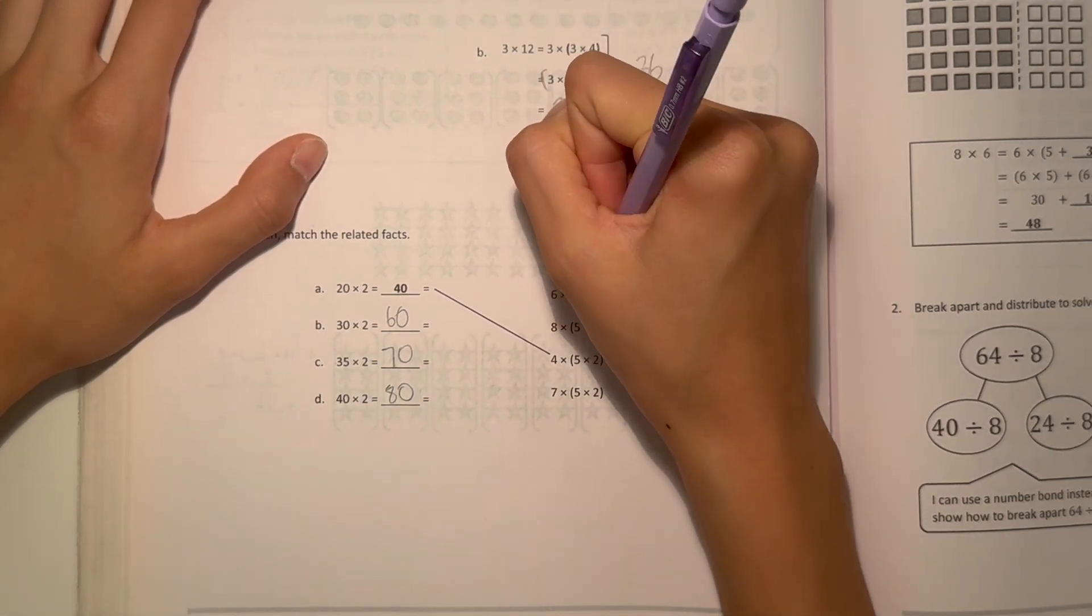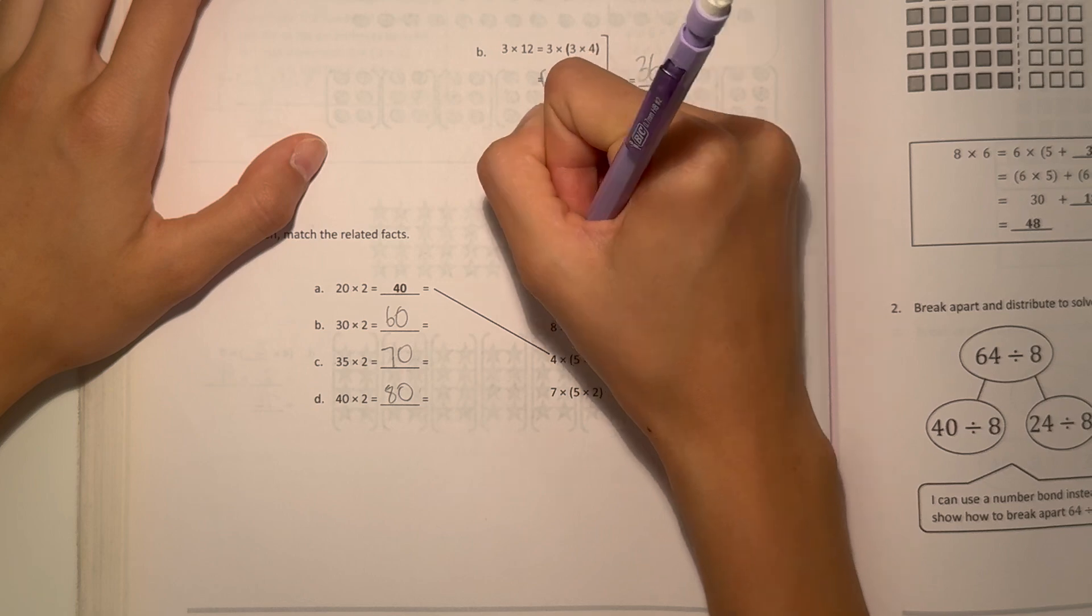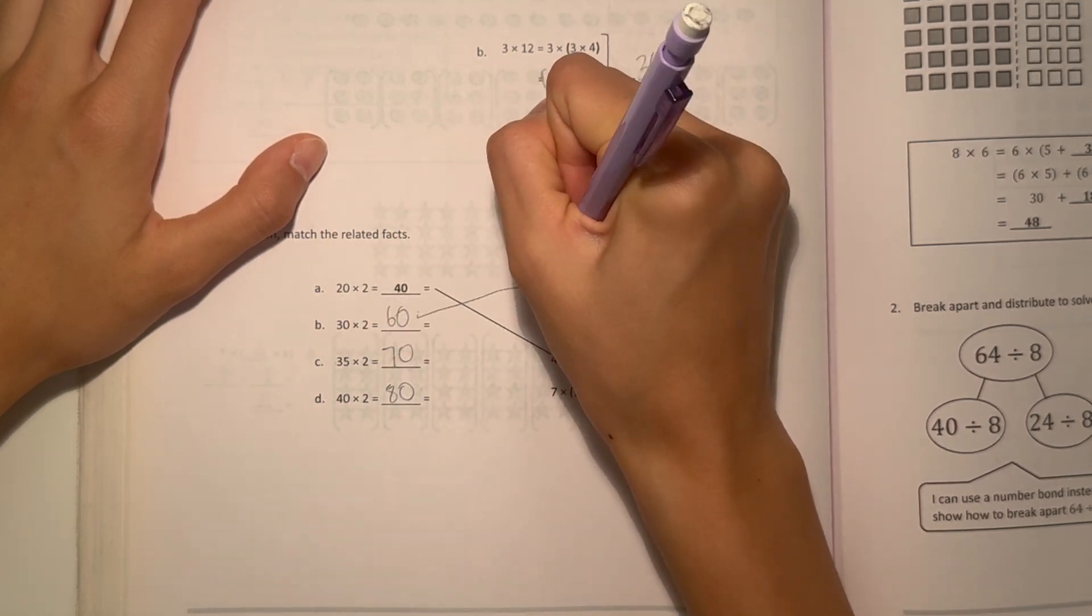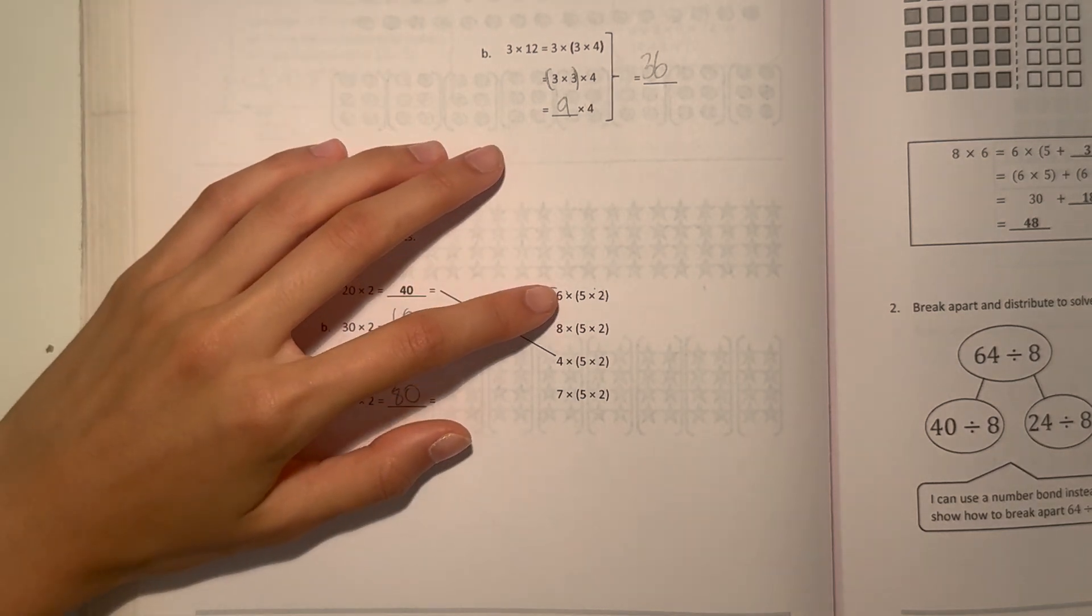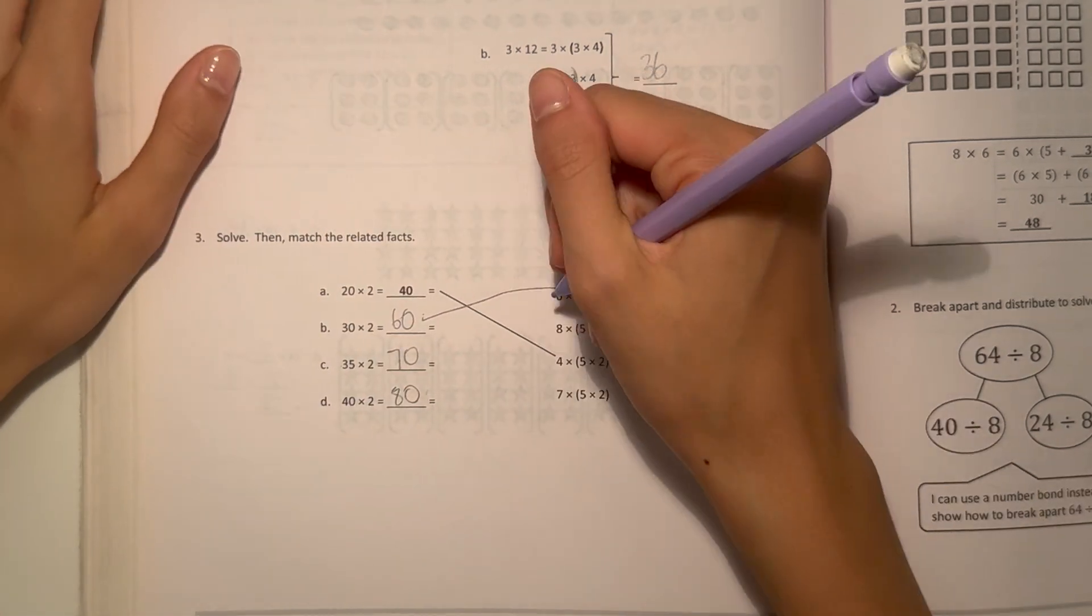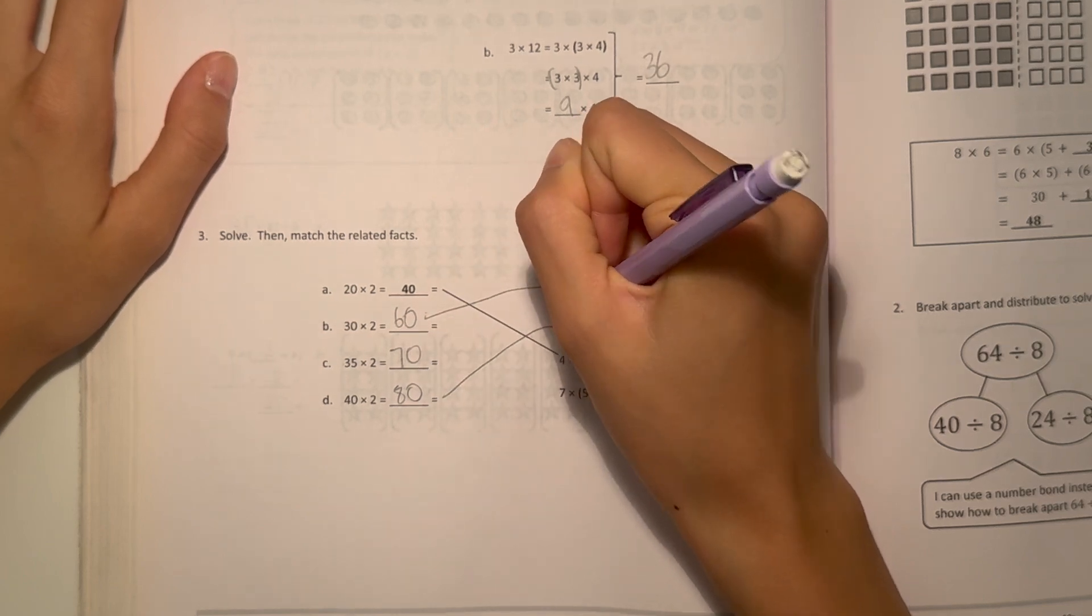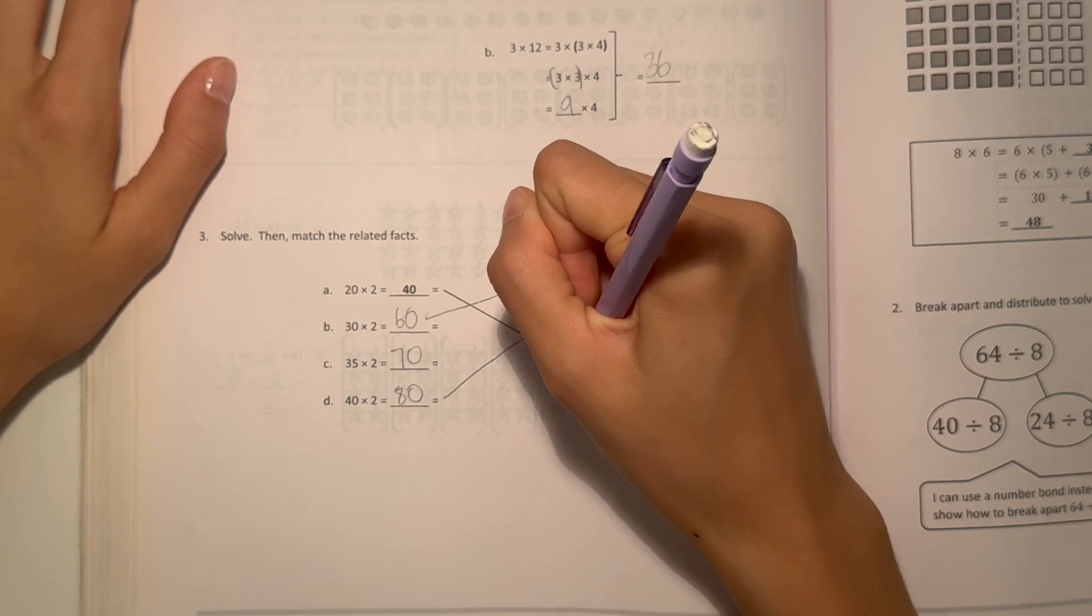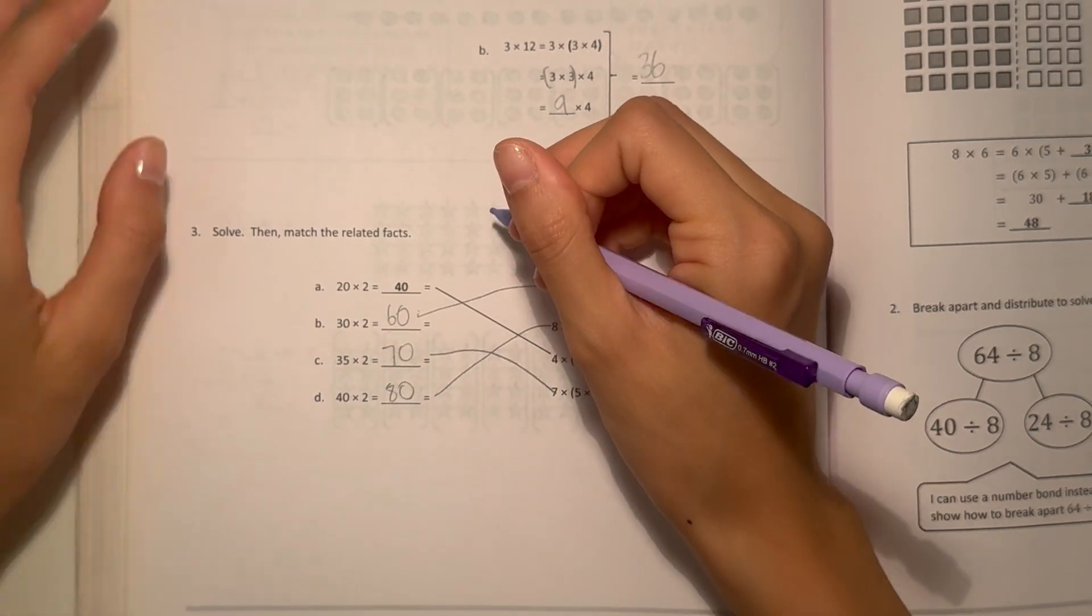So 6 times 5 times 2: 5 times 2 is 10, times 6 is 60. And this one's 60, so these match. 8 times 5 times 2: 5 times 2 is 10, times 8 is 80, so these match. And this one's taken. And now 5 times 2 is 10, times 7 is 70, so these two match.